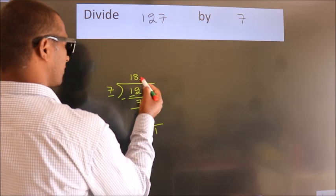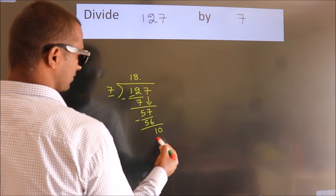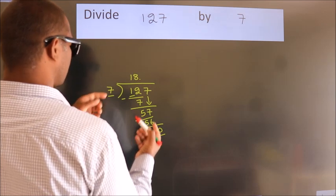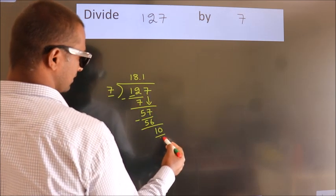So what we do is we put a dot, take 0. So 10. A number close to 10 in the 7 table is 7 times 1 equals 7.